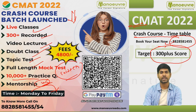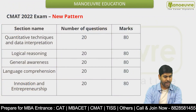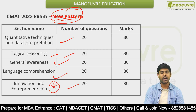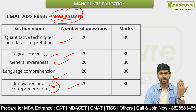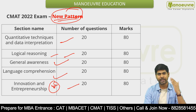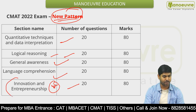Now let me talk about the new pattern. Your Quant is 20, Logic is 20, General Awareness is 20, English is 20, and Innovation and Entrepreneurship is also 20. Earlier, the old pattern had a 25-question breakup per section, and Innovation and Entrepreneurship was optional.